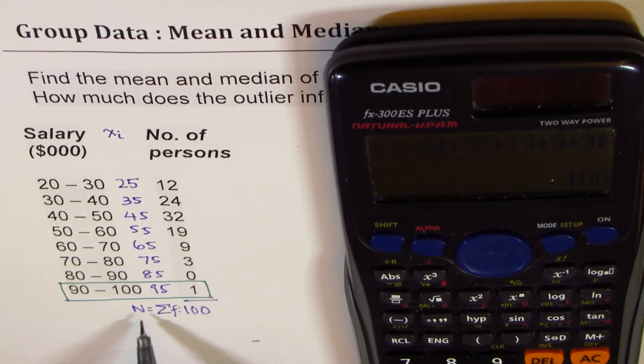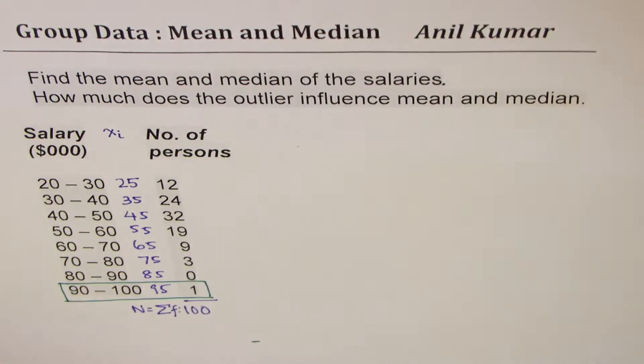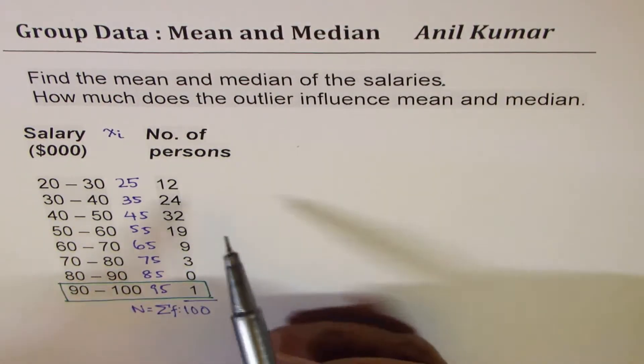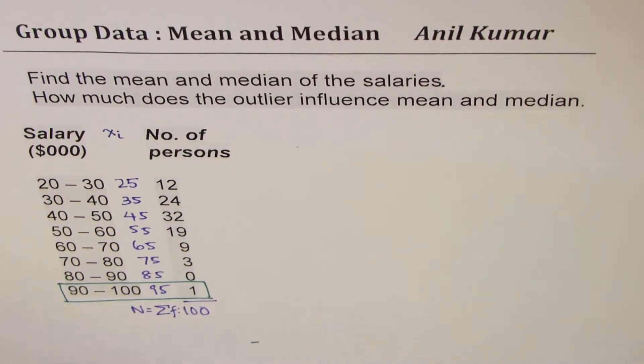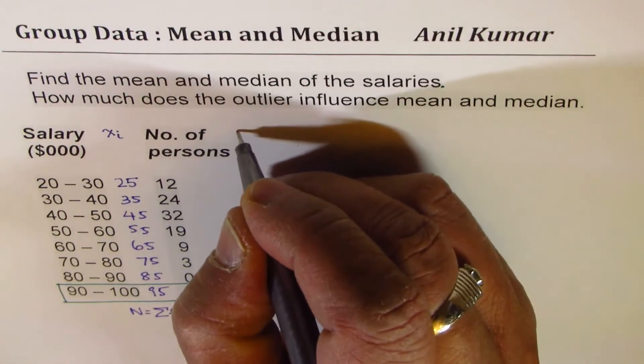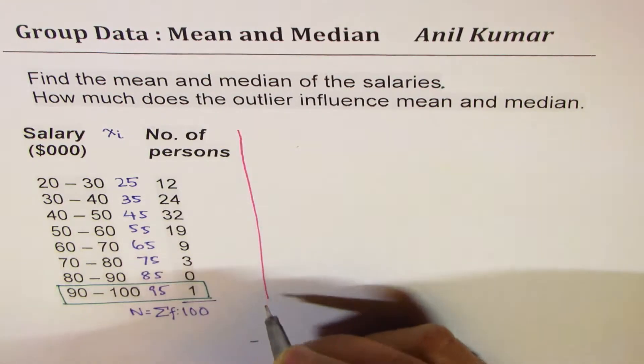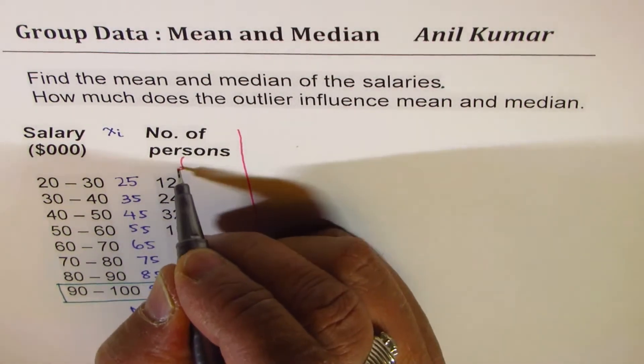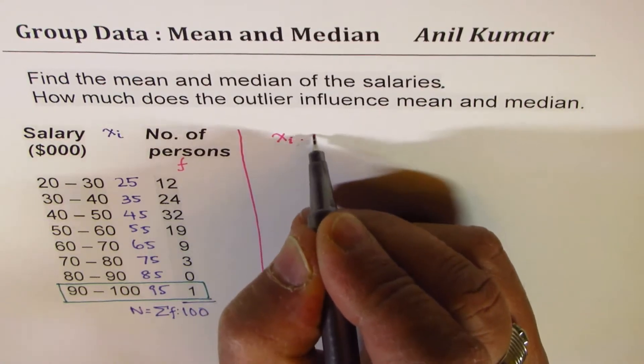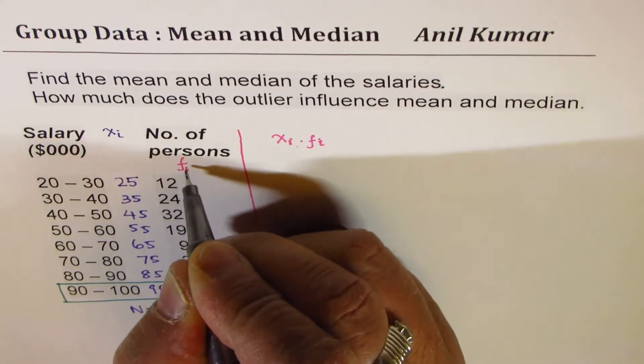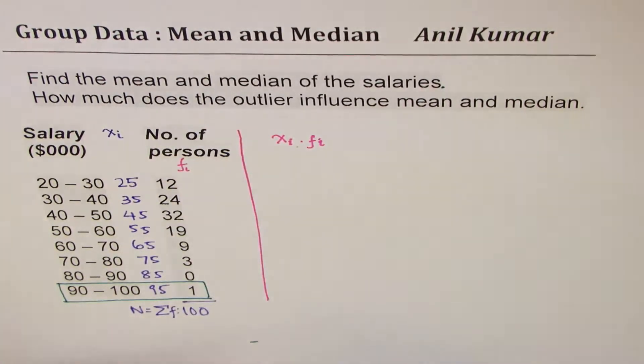We need to add a column here multiplying XI times FI, the frequency of each class. Let's multiply this.